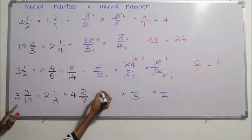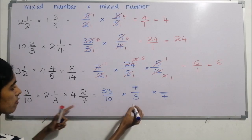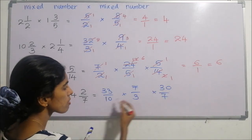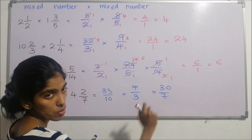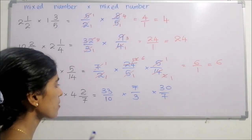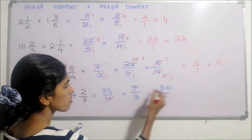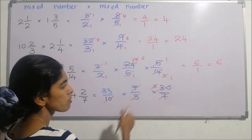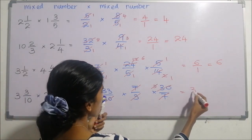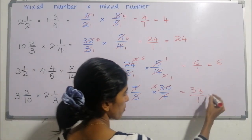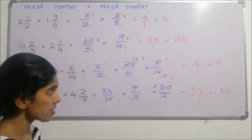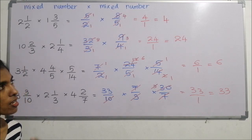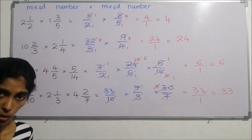Next: denominators are ten, three, and seven. Convert mixed numbers — numerator thirty-three; next seven and thirty. Simplify: seven and seven cancel; ten and thirty share factor ten — three times one, three times one. Final answer: thirty-three over one, which equals thirty-three as a whole number. Note that fractions can also appear as final answers depending on the example — remember that.